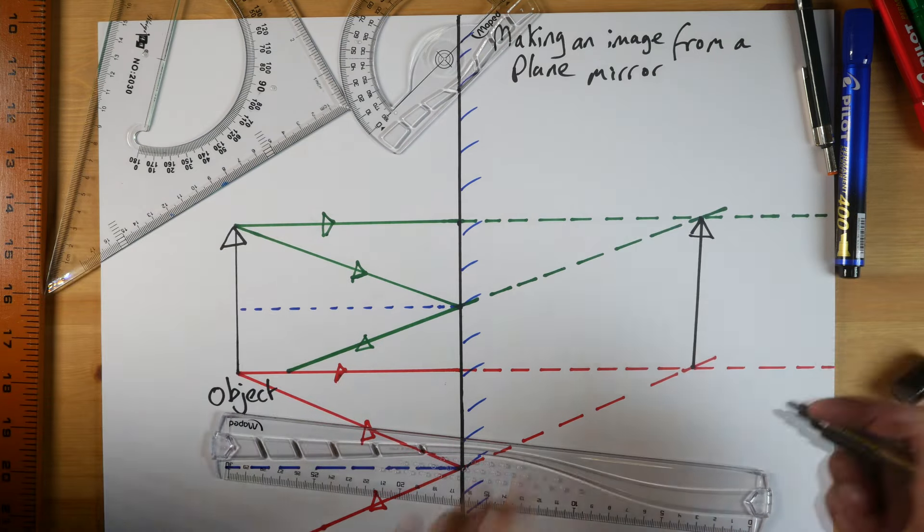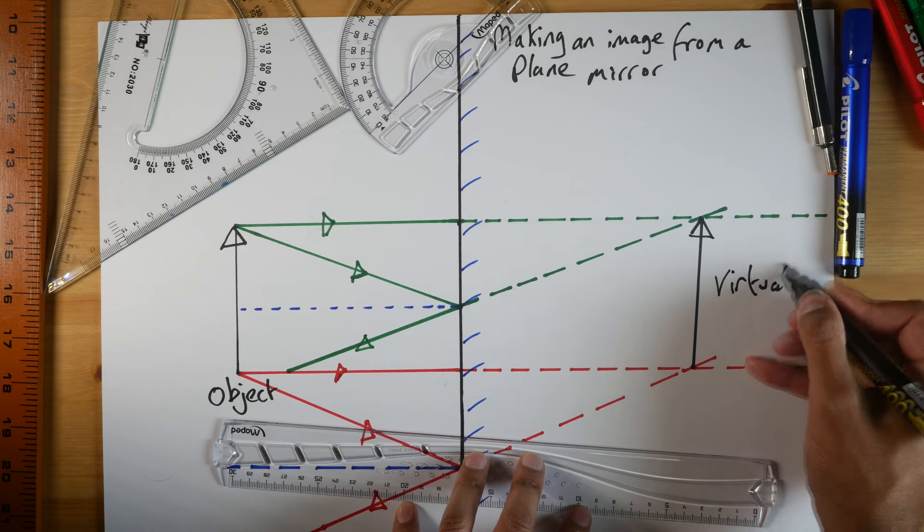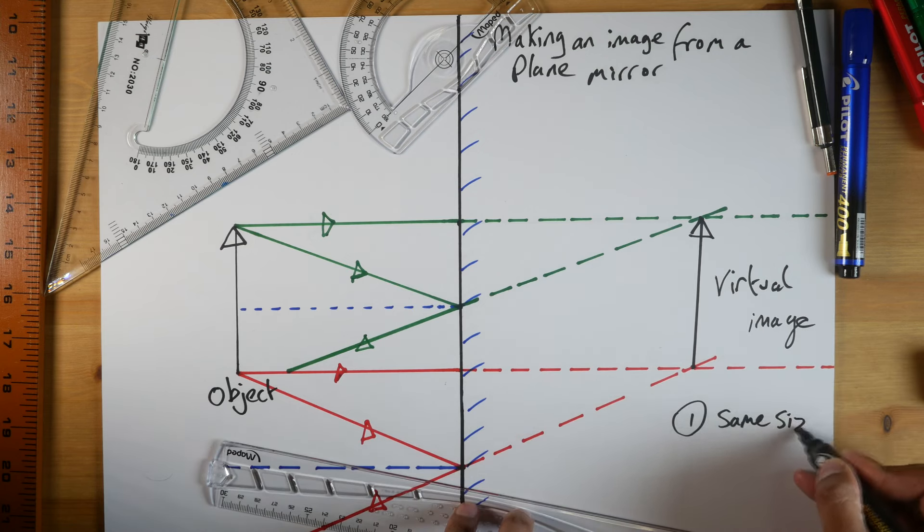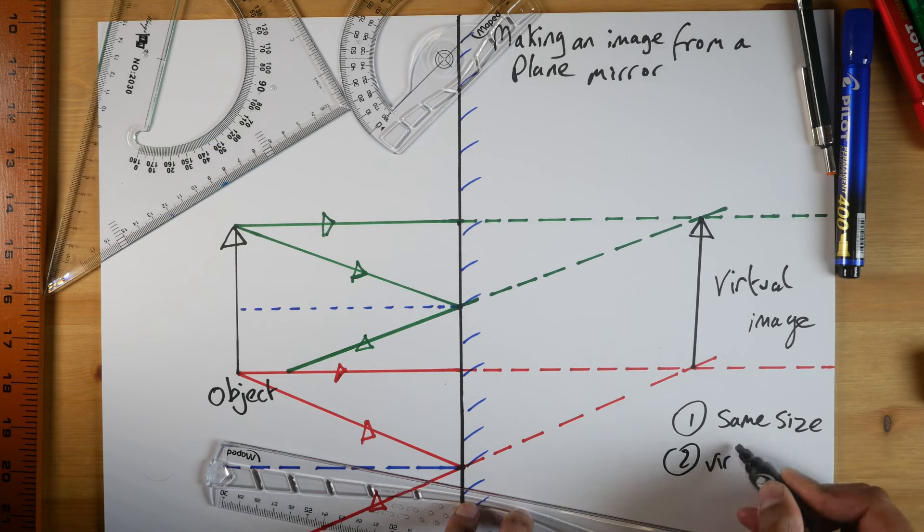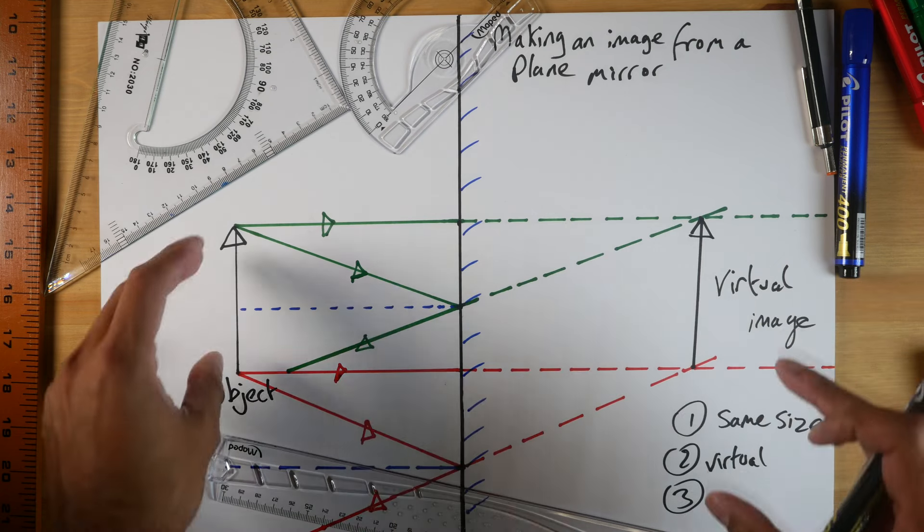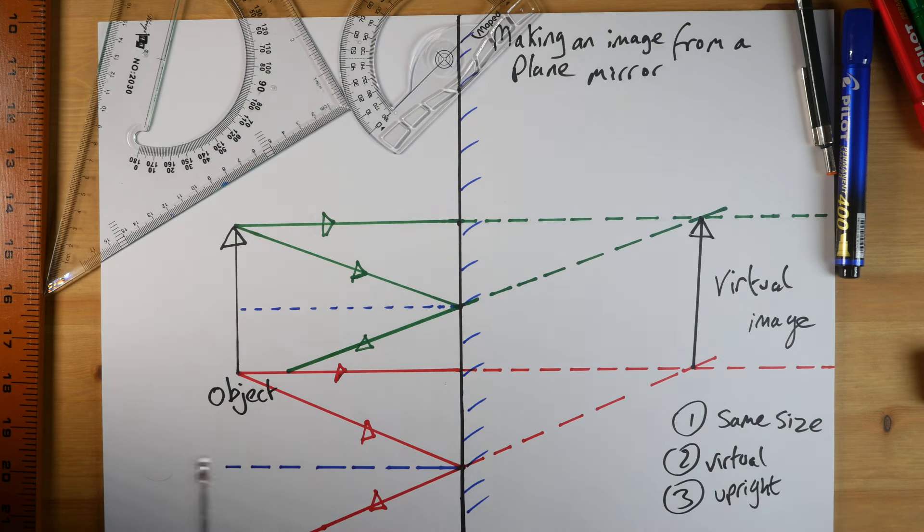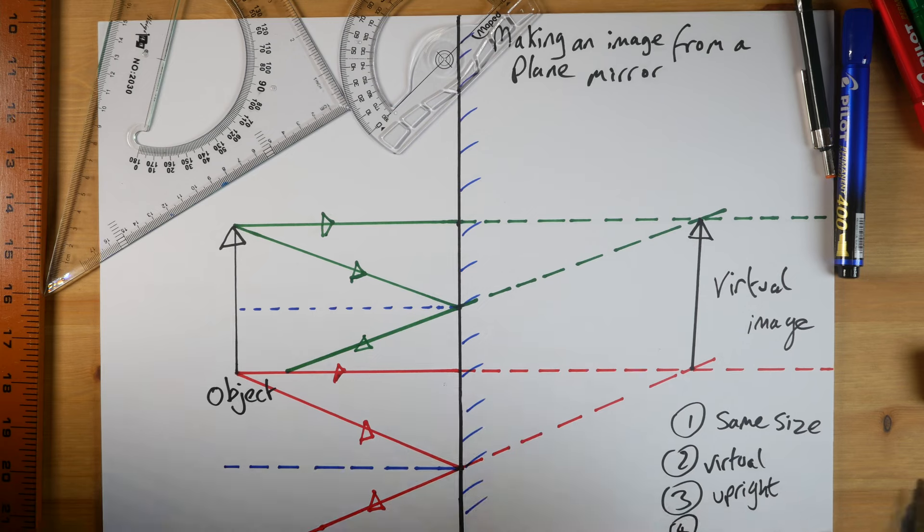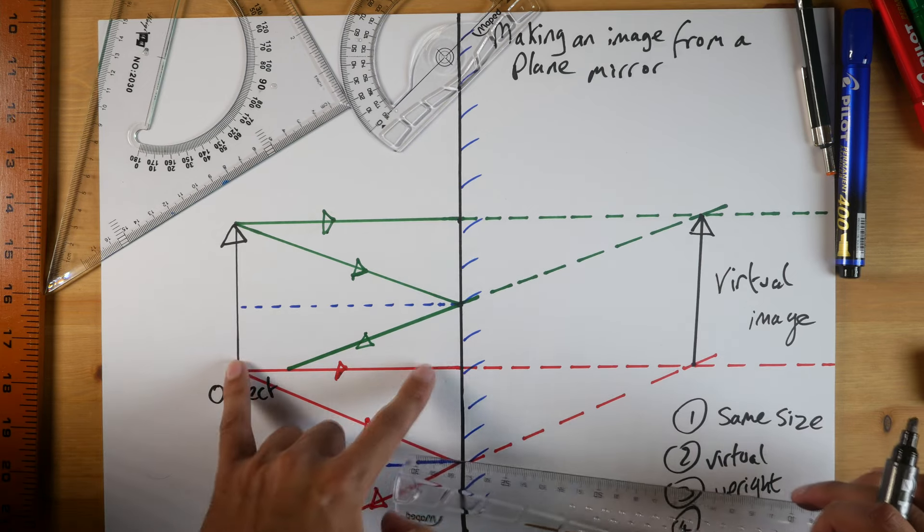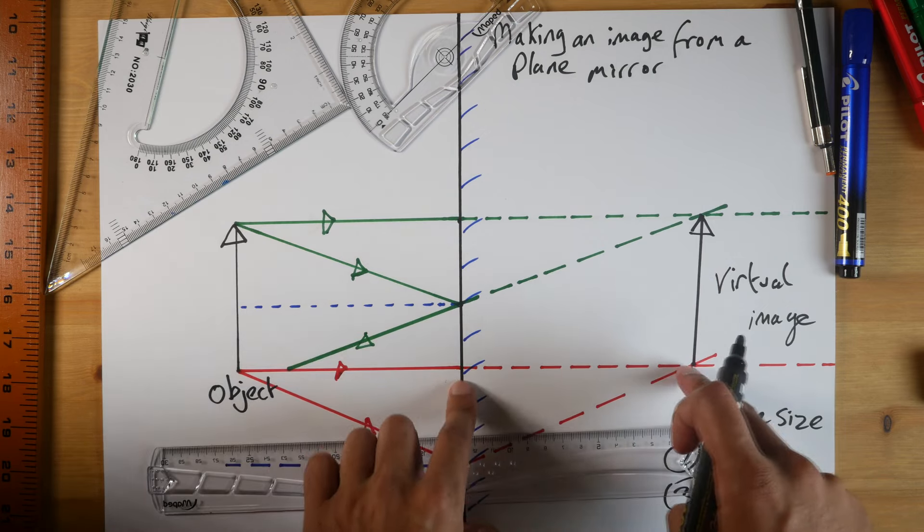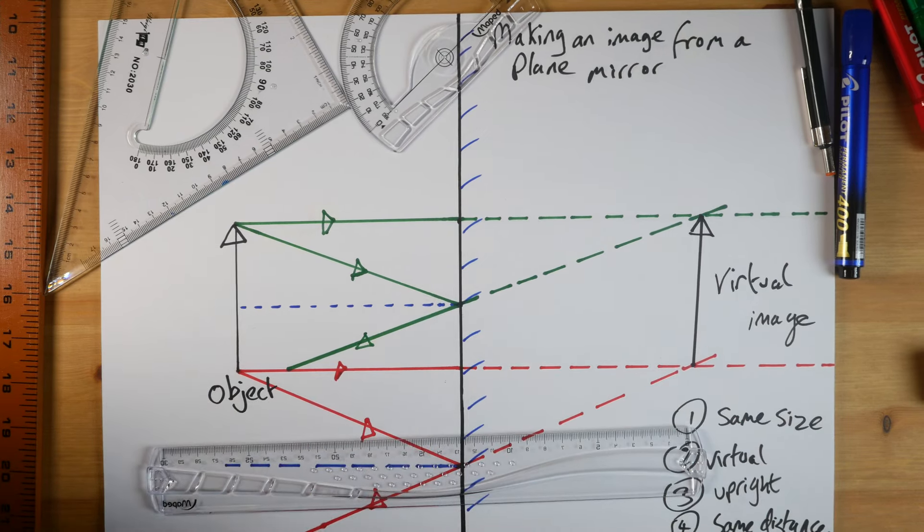Number one is the same size as the original object. So this is what we call the virtual image. So number one, same size. Number two is virtual. Number three is the right way up. So we call it upright. The opposite of upright is upside down or some people say inverted, but this one happens to be upright. It's also number four, the same distance away from the mirror as the object is to the mirror. So I'm just going to write same distance. In the exam, make sure you write the whole thing, same distance away from the mirror as the object is to the mirror.